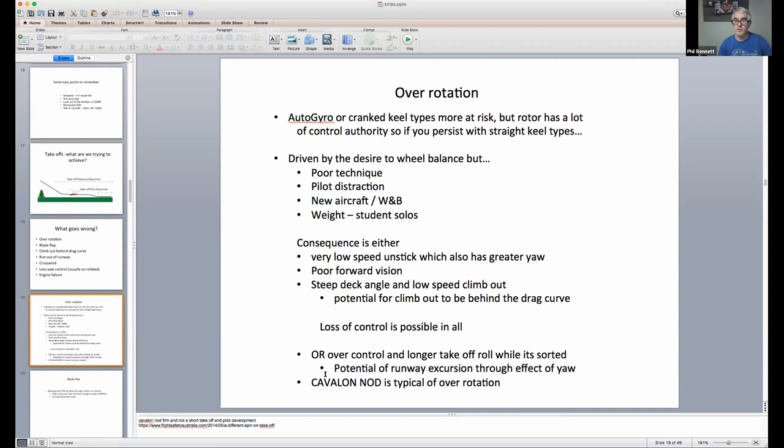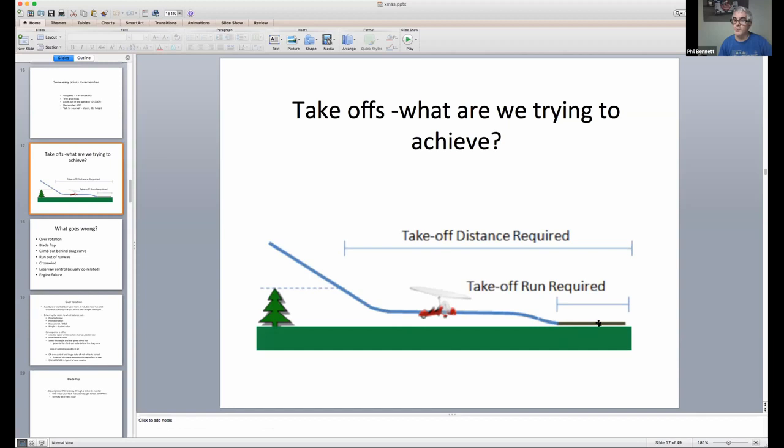The other thing about being quite nose high is that you can't see quite so well, so you start peering. And also, if you then continue that angle into the climb out, potentially, you're climbing out much steeper than you might want to. And again, loss of control is possible in all. And of course, I call it cavalon knob. It's a very common thing in cavalons. One of the problems, of course, is while you're sorting all this out. When you think about our distance required to clear 50 feet, in sorting out all these problems, just eats runway.